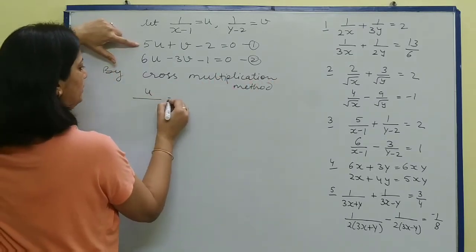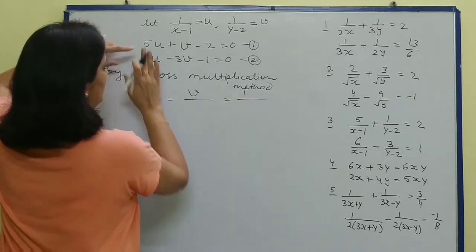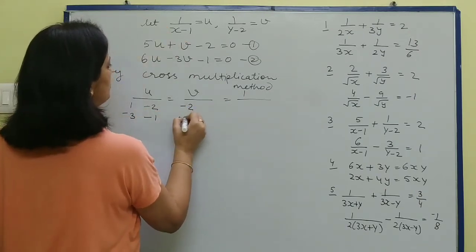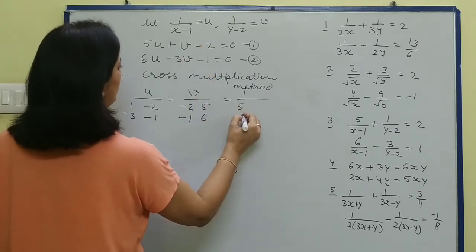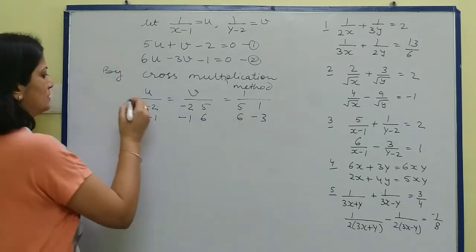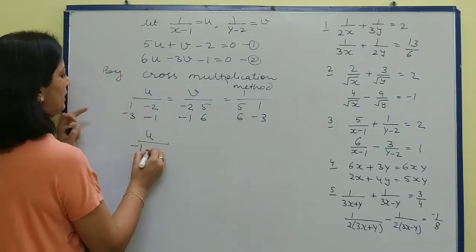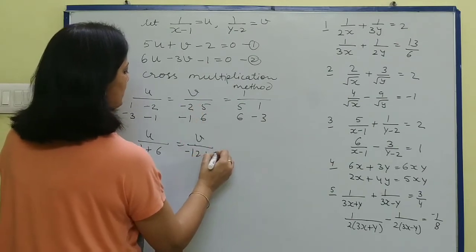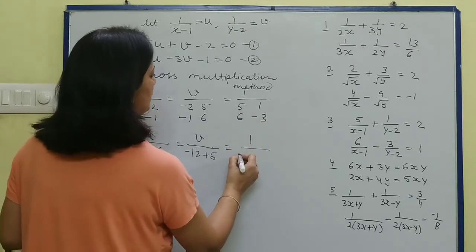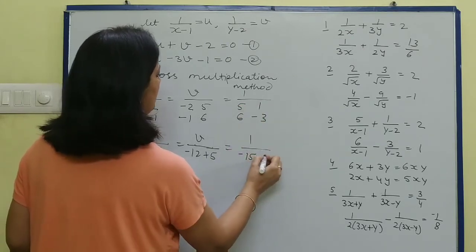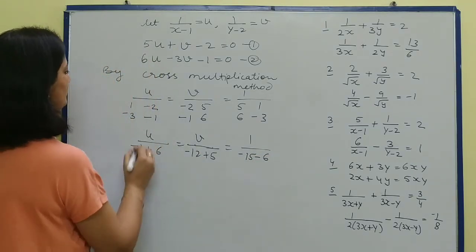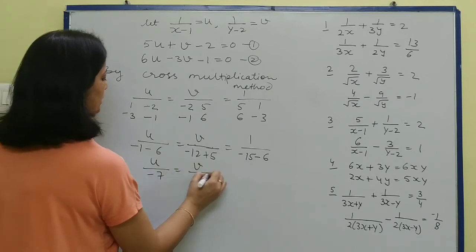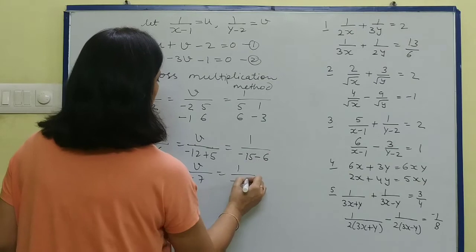Applying cross multiplication: u upon, v upon, 1 upon. For u's column: 1, -3, -2, -1. For v's column: -2, -1, 5, 6. For 1's column: 5, 6, 1, -3. Solving: u upon = 1×(-1) - (-3×(-2)) = -1 - 6 = -7. V upon = (-2×6) - (-1×5) = -12 + 5 = -7. And 1 upon = 5×(-3) - 6×1 = -15 - 6 = -21.